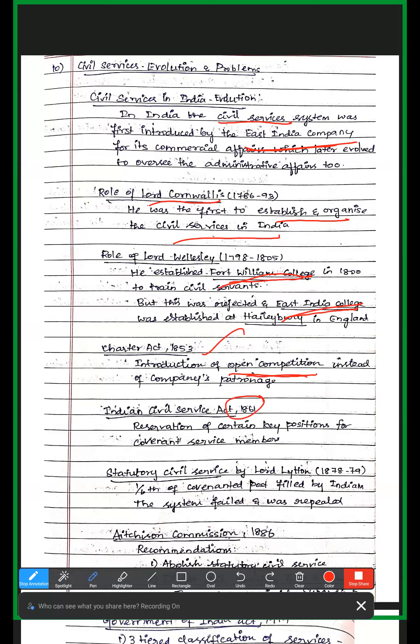Then in 1861, the key positions were given to the Covenanted Service members. Then the Statutory Civil Service was introduced by Lord Lytton. In the Covenanted posts, one-sixth of the posts were to be given to Indians.